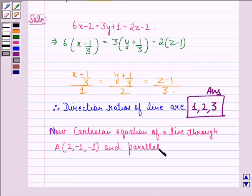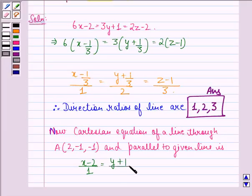(x minus 2) divided by 1 equals (y plus 1) divided by 2 equals (z plus 1) divided by 3.